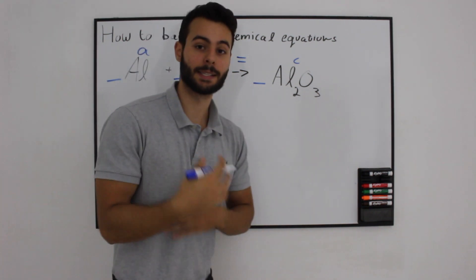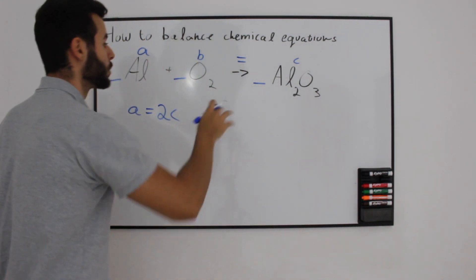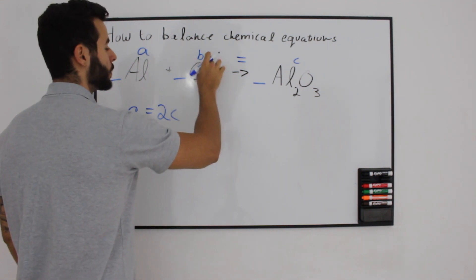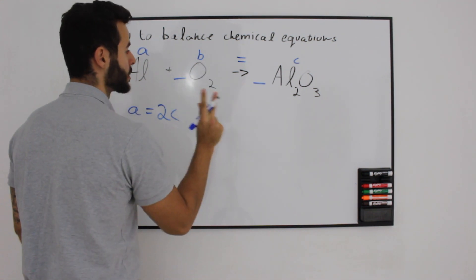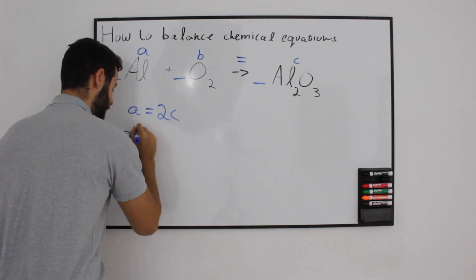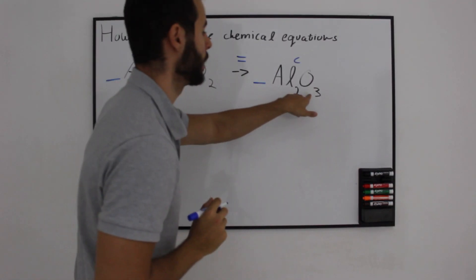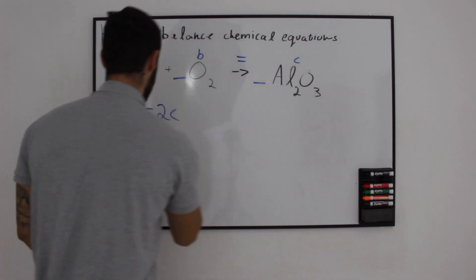But in order to create a set of equations, we have to keep going and create more equations. So let's go to the letter B. We have 2 oxygens. So 2B equals 3 on the other side, so 3C.